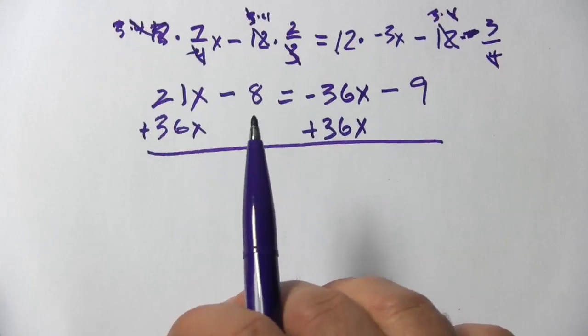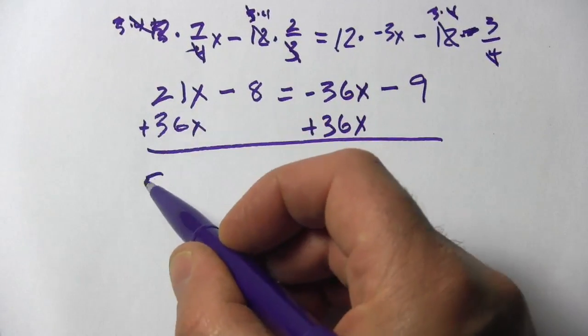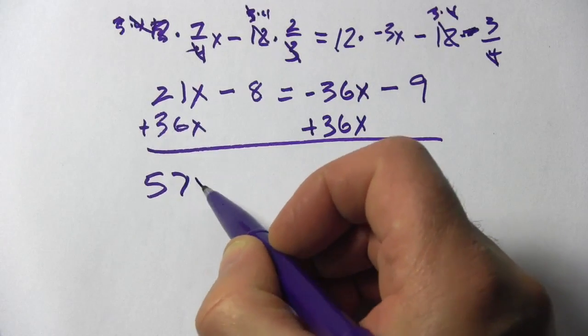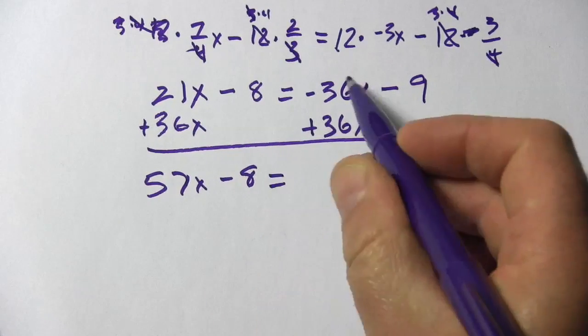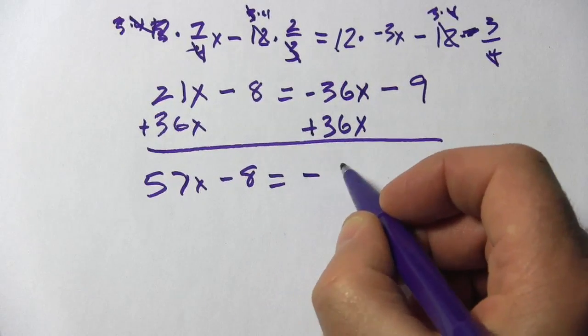So over here we get, let's see, 57x minus 8 equals - and this is 0 - so just minus 9.